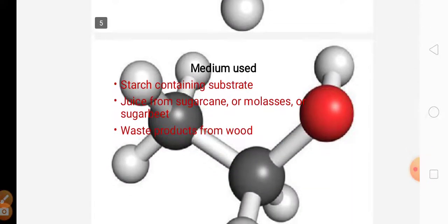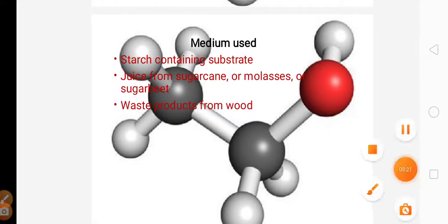Next comes the medium which is used for the production of ethanol. First is starch containing substrate. We have seen beet molasses, potatoes, and cassava. These are the starch containing substrates which are used as a medium for ethanol production.